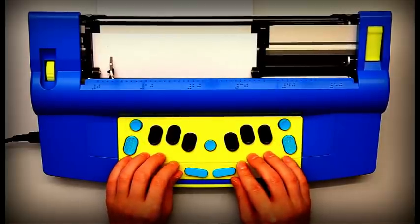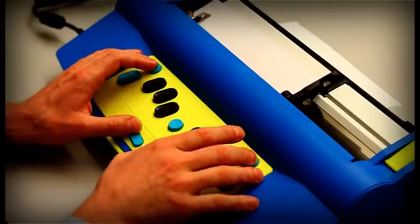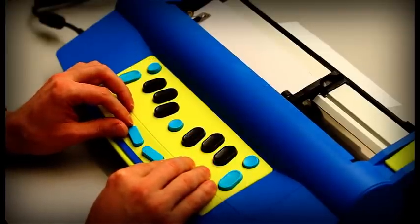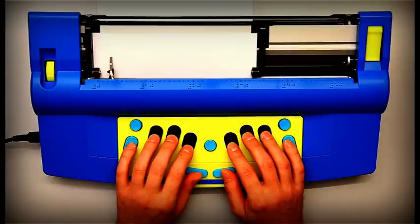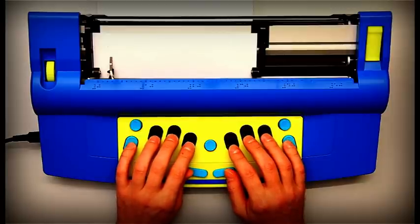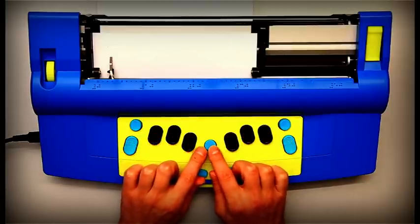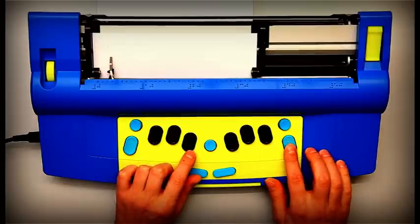When you activate the command key, you will hear the Mountbatten say 'command on.' This means you can now enter various commands. All regular commands begin with the command key and finish with the enter key with a command name in between.